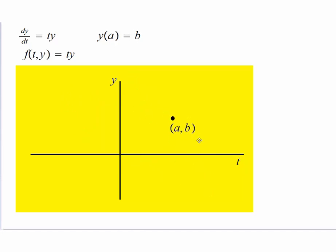That is, for any value of a and b we are guaranteed a solution. And moreover, since df/dy is t, and that is also continuous in the entire ty plane, the solution for this initial value problem will be unique as well.